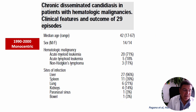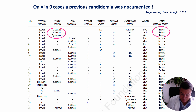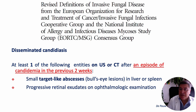A study we performed between 1990 and 2000 demonstrated that among 29 episodes of chronic disseminated candidiasis, only in nine cases was there a previous candidemia. So in the majority of cases it was a probable localization, and as you can see on the left of the slide, in the majority of cases the organism was Candida albicans.